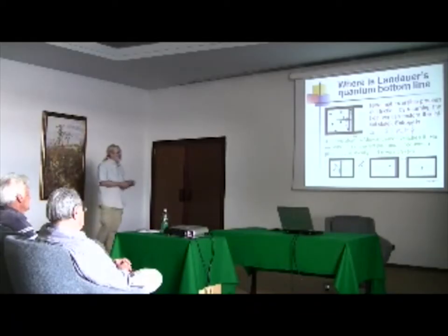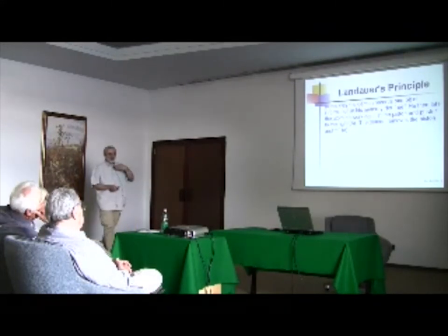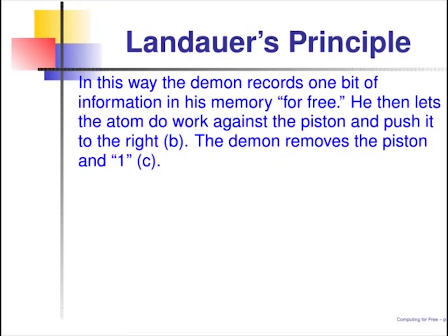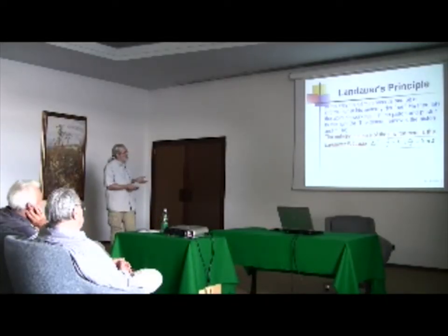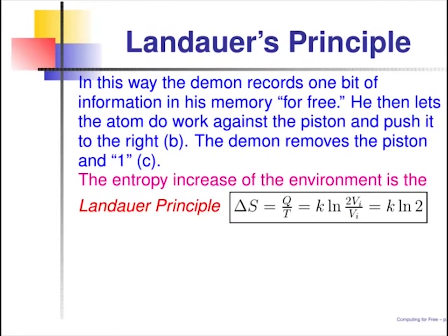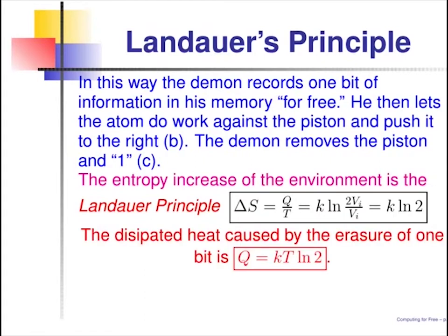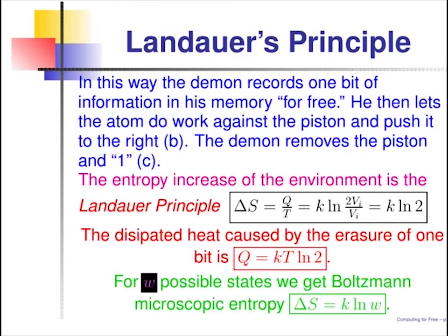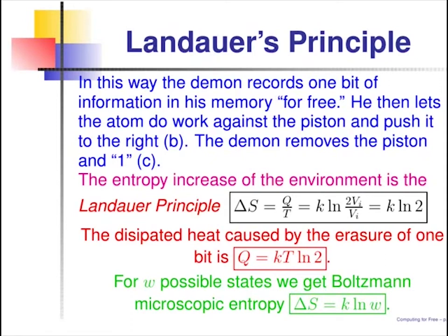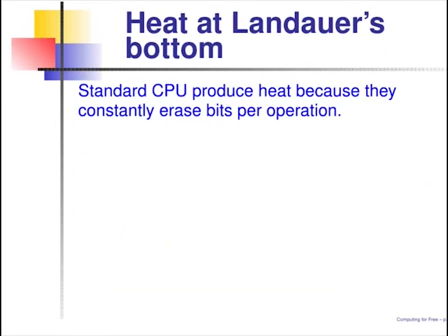What happens next? When you want to get the result or calculate something else, you have to erase that one bit. As soon as you record it, you erase it. At some point the demon removes the piston wall between the two parts of the compartment, and it raises one — the entropy of the environment increases. We have the principle that entropy is given by this amount per atom, per bit. We can have more atoms, giving the famous Boltzmann entropy — that's the epitaph on Boltzmann's grave in Vienna — which is the entropy ascribed to information transferred in computation. The unavoidable part of any computation is erasing bits of information.